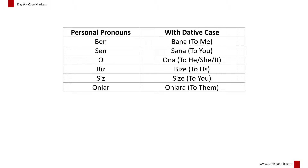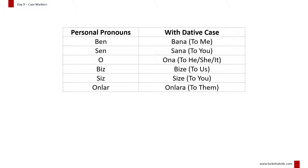Personal pronouns can also be used in the dative case: Ben → bana, sen → sana, o → ona, biz → bize, siz → size, onlar → onlara.